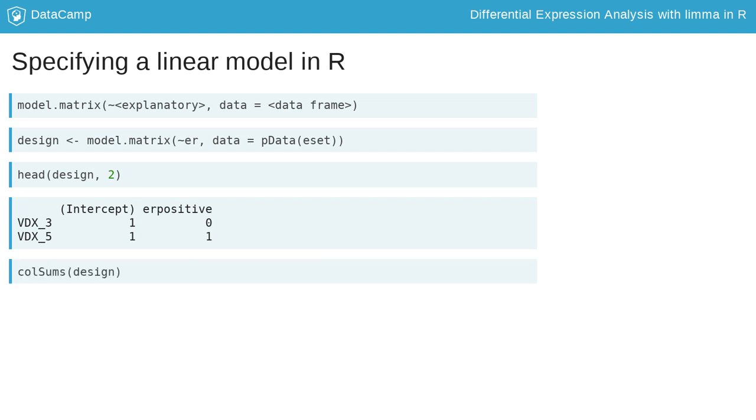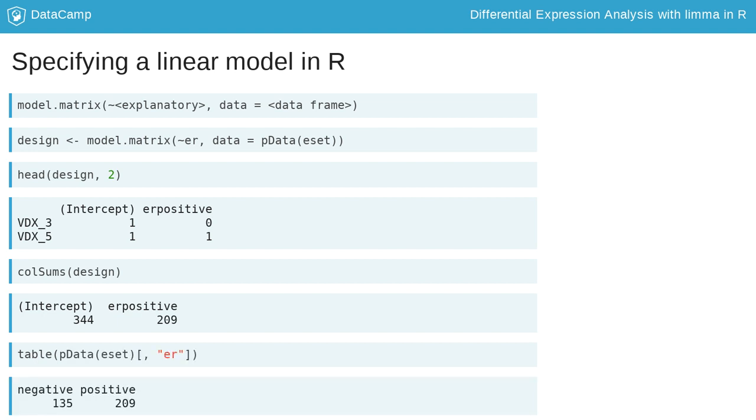Summing the columns of the design matrix is a good sanity check. The number of samples modeled by the ER coefficient should equal the number of ER positive samples, 209.